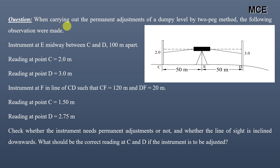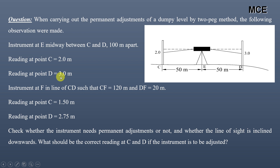The given question states that when carrying out the permanent adjustment of a dumpy level by the two-peg method, the following observations were made. When the instrument was placed at point E, midway between C and D which are 100m apart, the reading at C is 2m and reading at D is 3m. When the instrument was placed at point F, in line with CD such that CF is 120m and DF is 20m, the reading at C is 1.5m and reading at D is 2.75m.